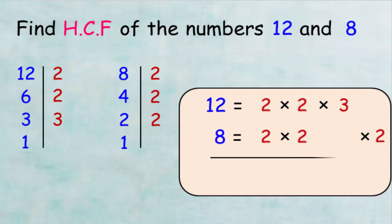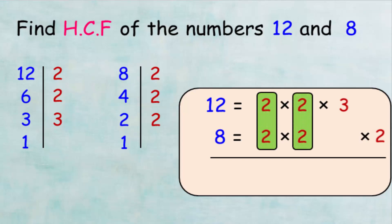Remember, equal factors should be placed below each other. As we see, the prime number 2 is repeated 2 times between the numbers 12 and 8. So the highest common factor between 12 and 8 is 2 times 2, which is equal to 4. Therefore, the HCF is 4.